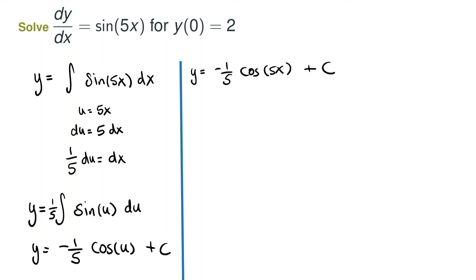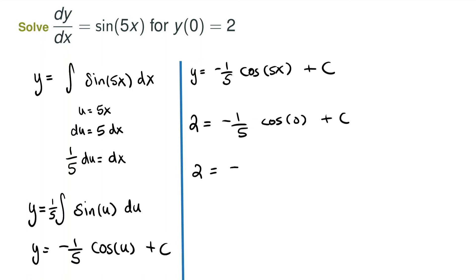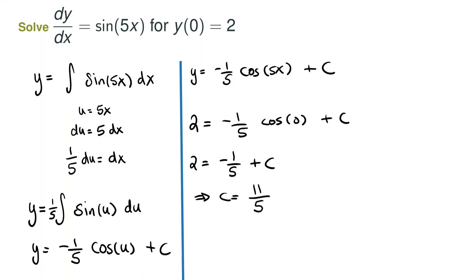Now we substitute and solve for our initial condition. We know the equation equals 2 when the input is 0. Cosine of 5 times 0 is cosine of 0, which equals 1. So 2 equals negative 1/5 plus C, and solving for C we get 11/5. Our solution is y equals negative cosine of 5x over 5 plus 11/5.